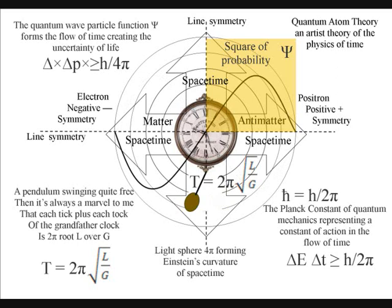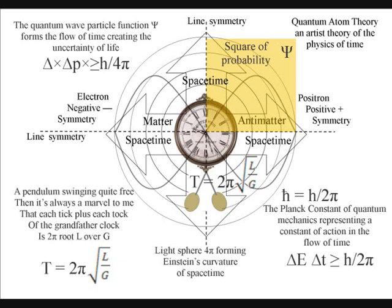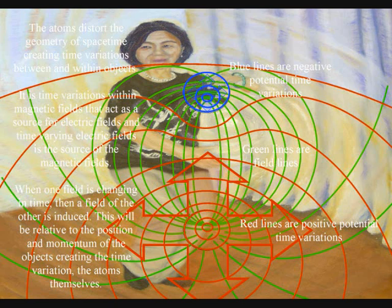It is time variations within magnetic fields that act as a source for electric fields, and time-varying electric fields is the source of magnetic fields. When one field is changing in time, then the field of the other is induced. This will be relative to the position and momentum of the objects creating the time variations, the atoms themselves interacting with the electromagnetic waves.